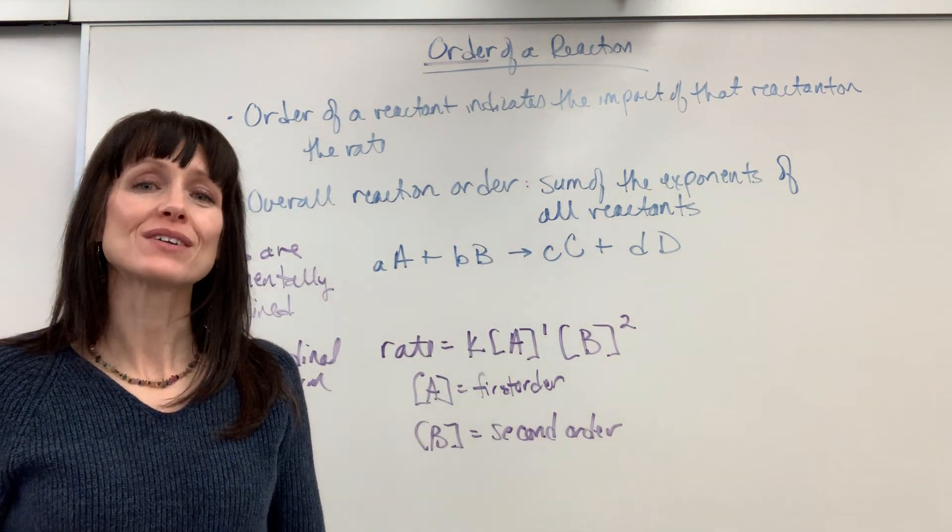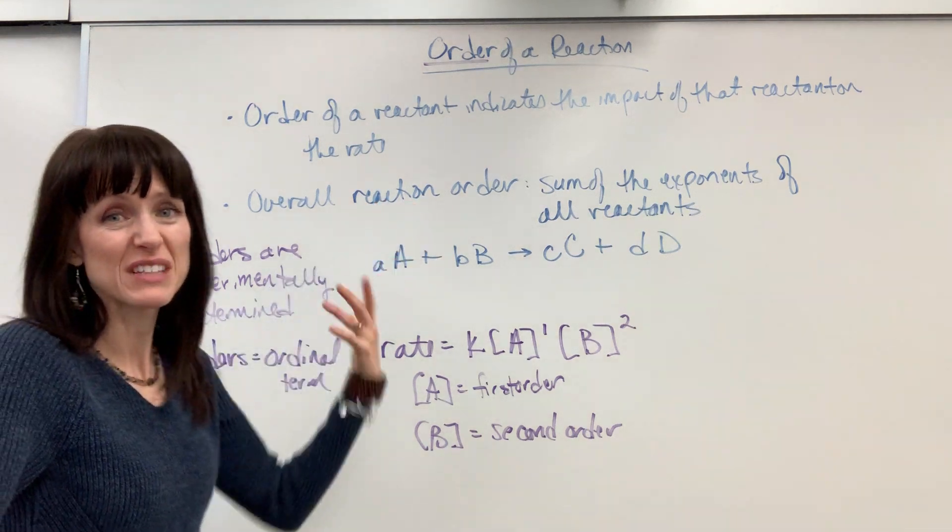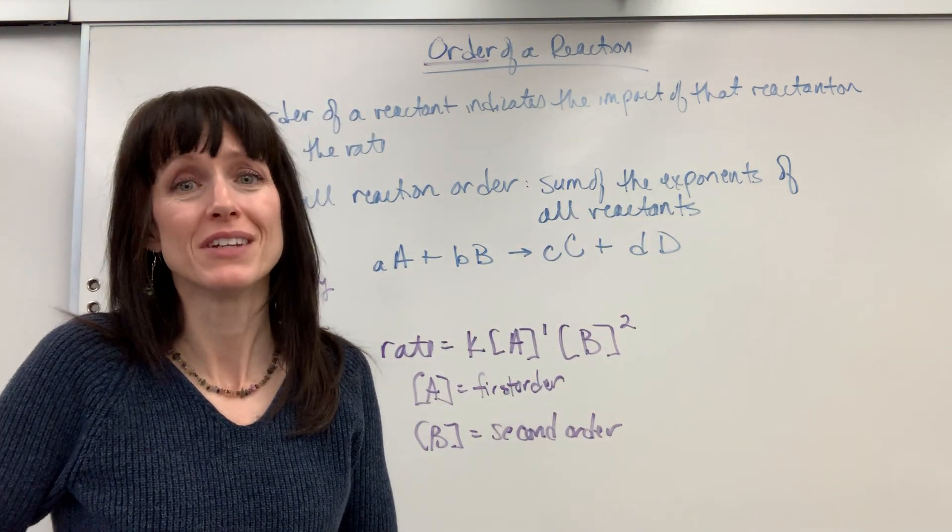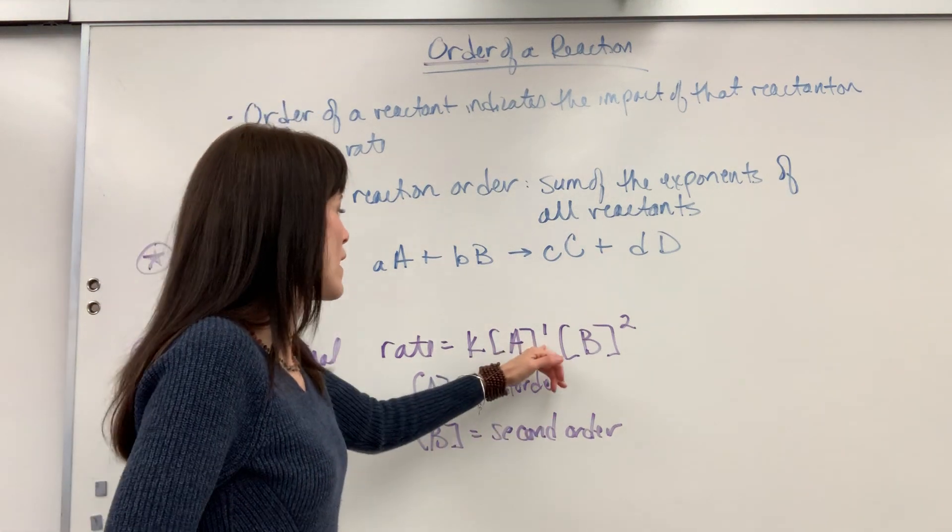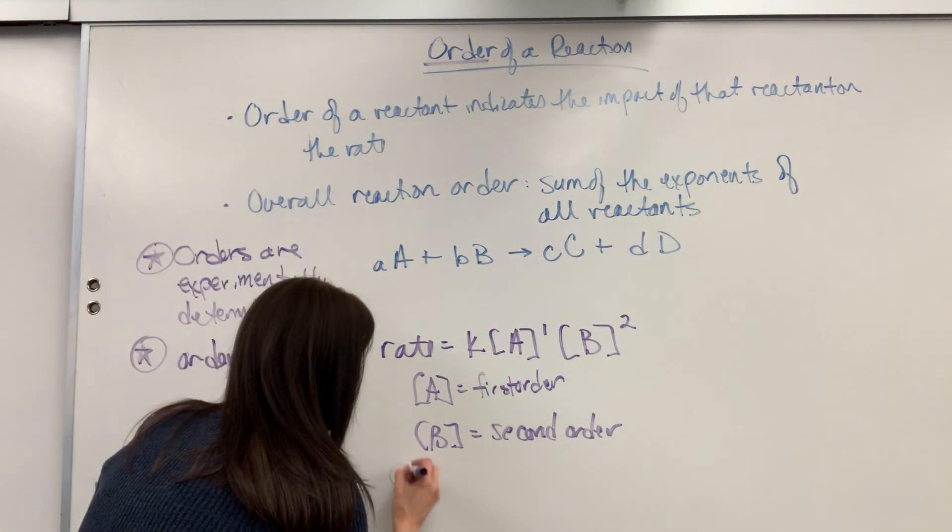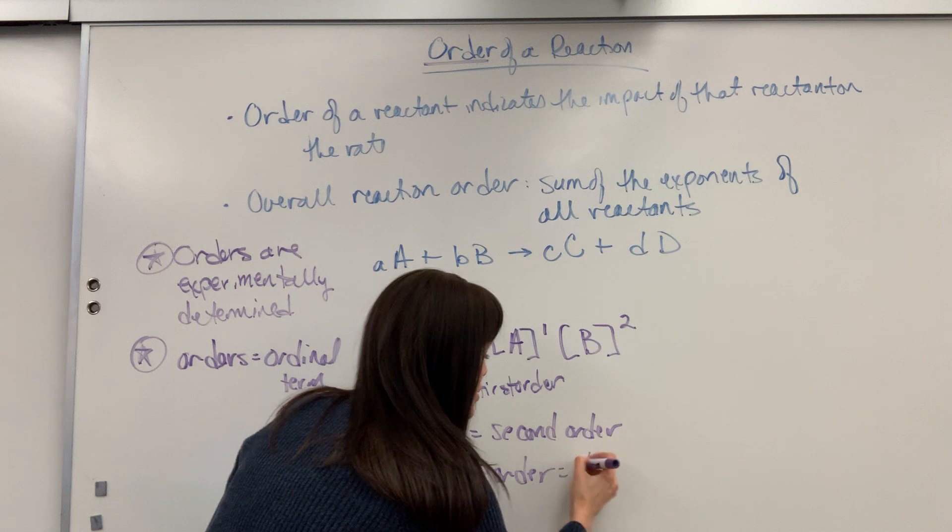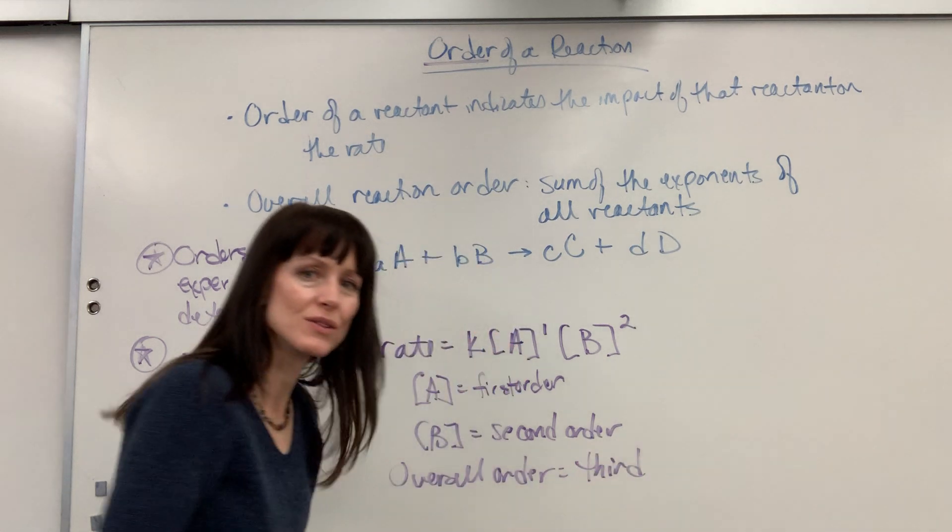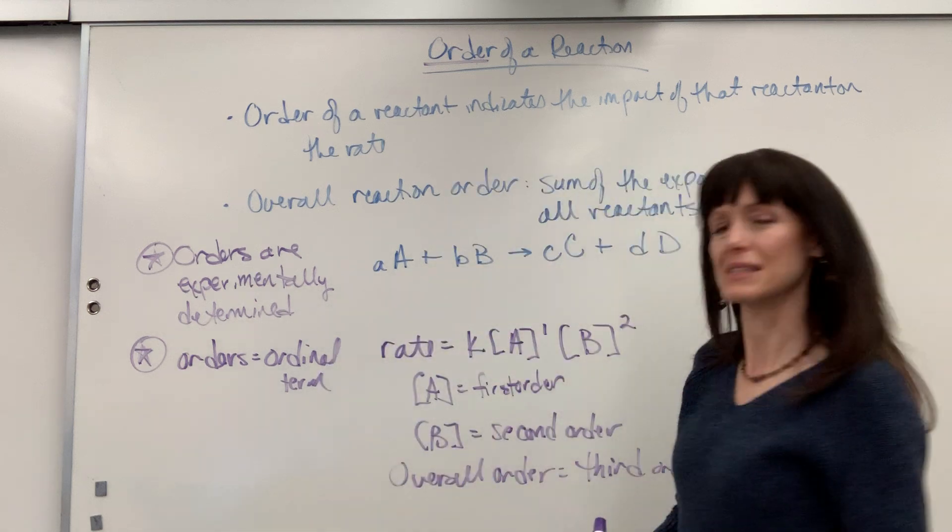Now, we have what's called the overall order. Now, the overall order of the reaction, really easy. It's just the sum of the exponents in the reaction. You just add up the exponents, add up the orders. So one plus two is three. So the overall order is third. Put it in the ordinal term, third order. Overall is going to be third order.